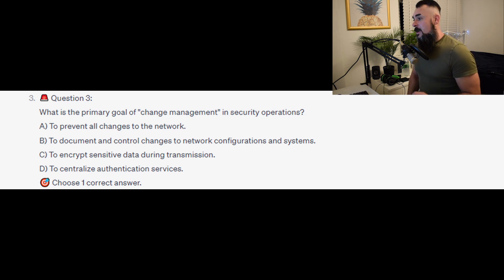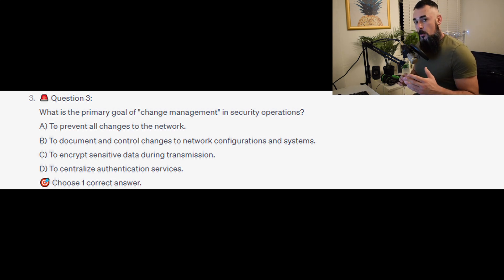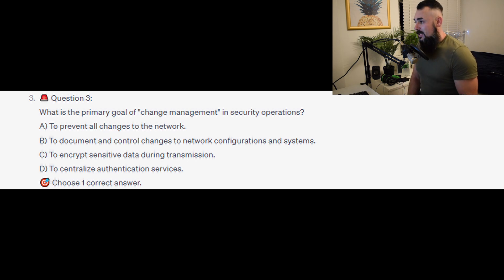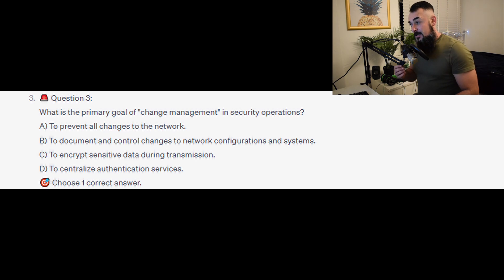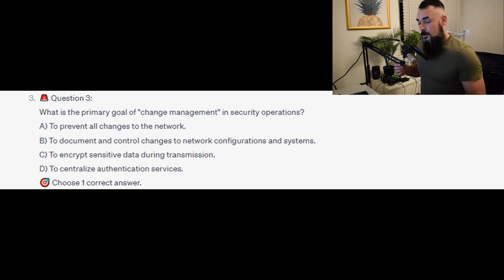Question 3: What is the primary goal of change management in security operations? Is it A, to prevent all changes to the network? Is it B, to document and control changes to network configurations and systems? Is it C, to encrypt sensitive data during transmission, or is it D, to centralise authentication services?